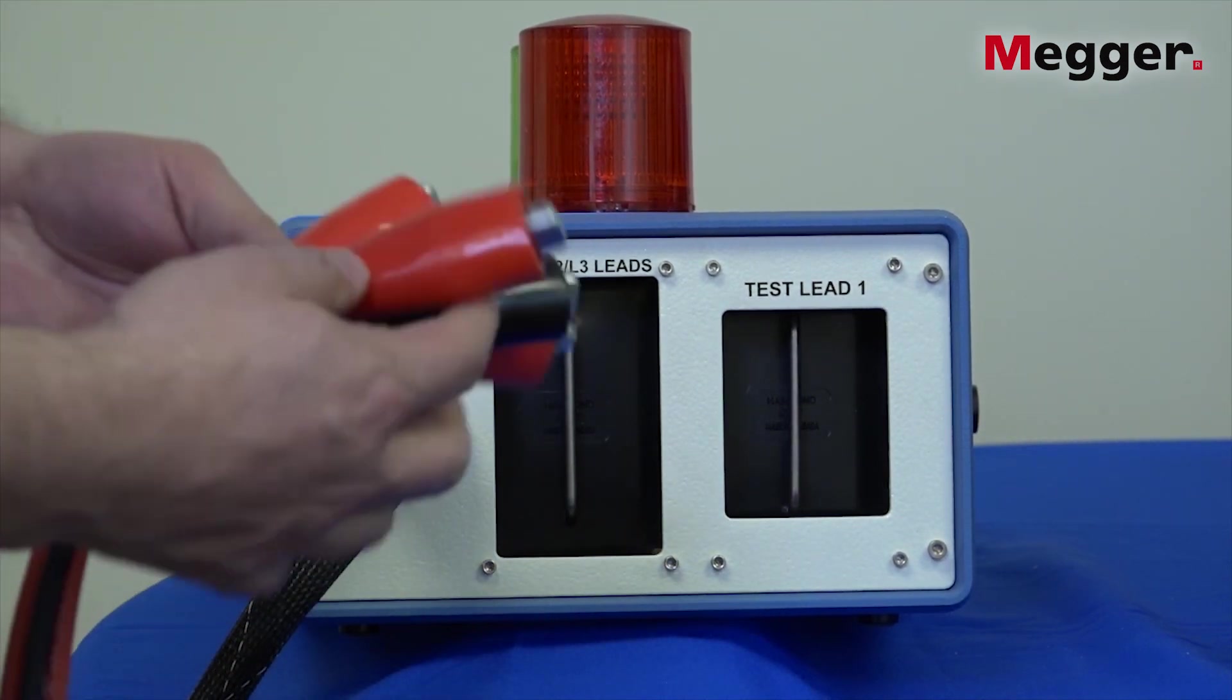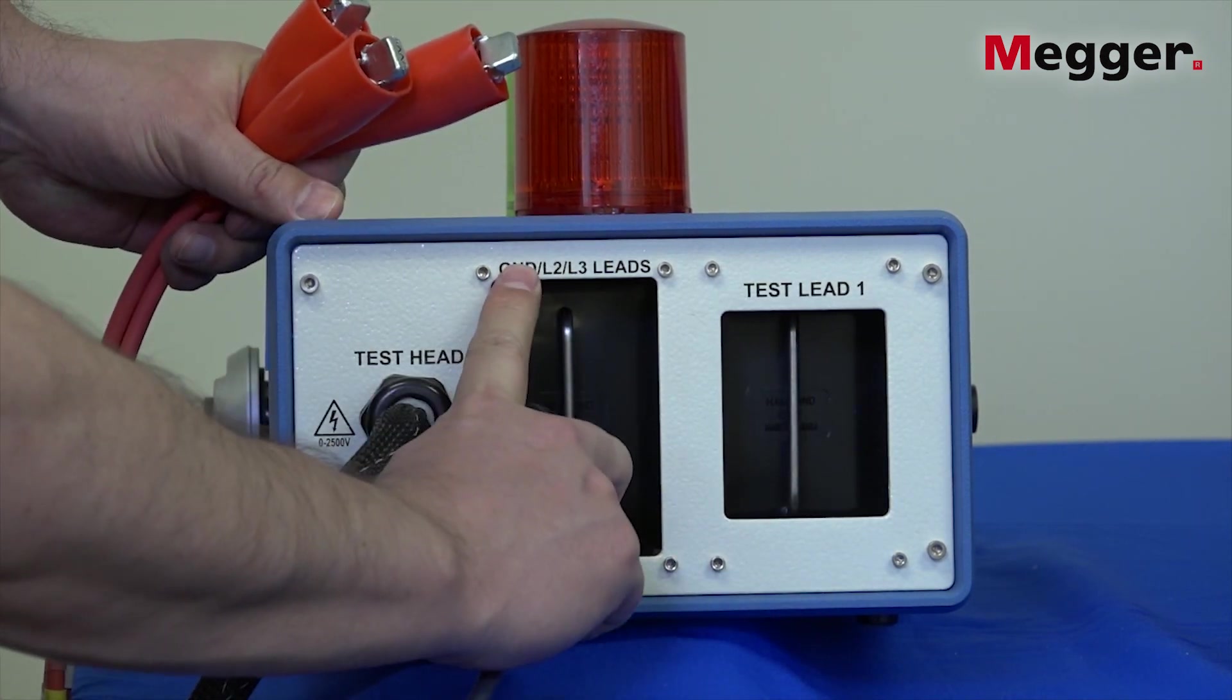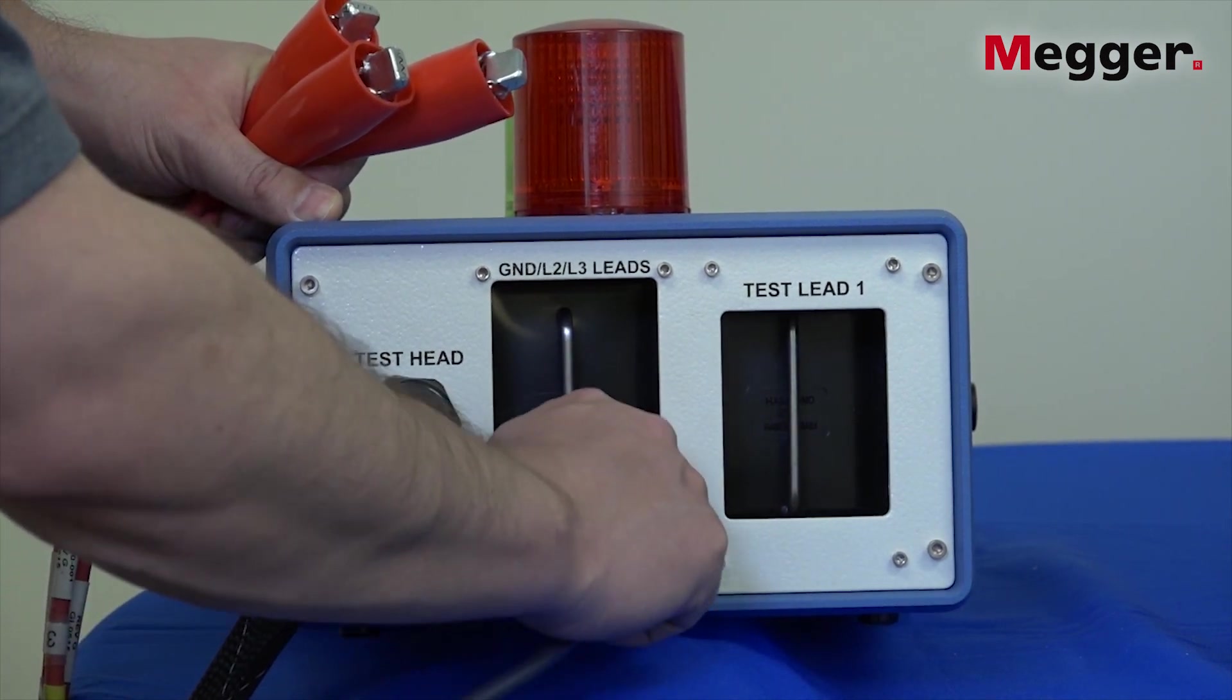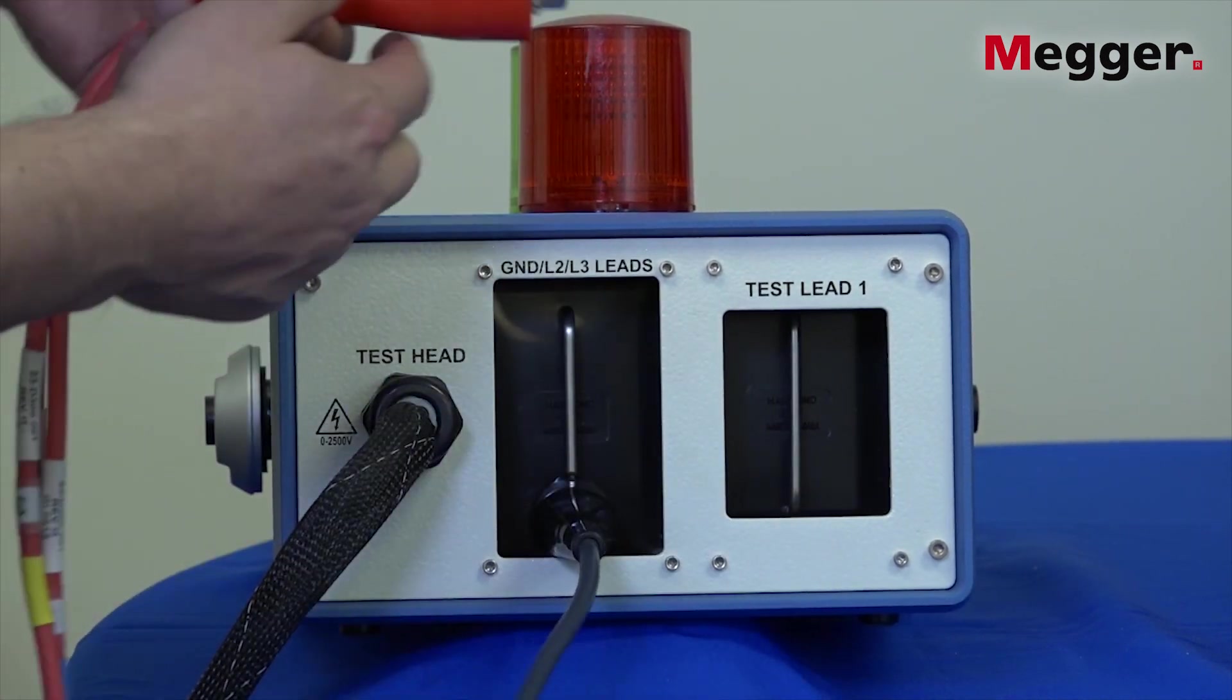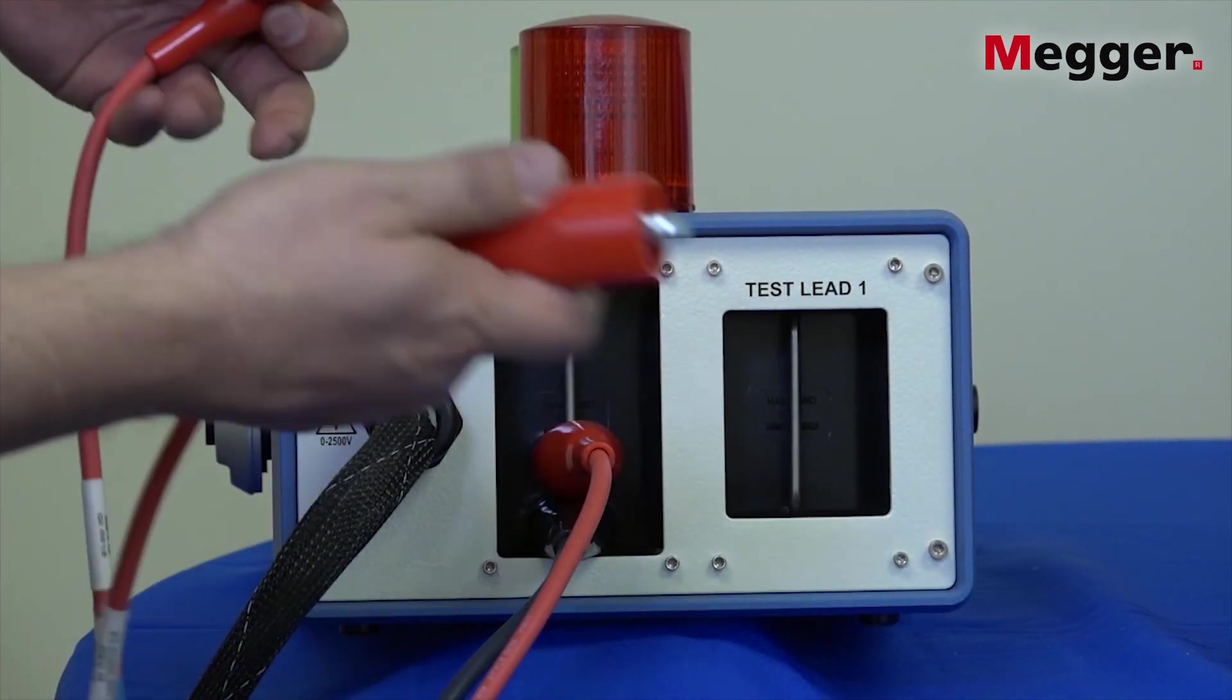First, connect the black ground lead to the left bar labeled ground lead, lead two, lead three. Clip that onto that post, and then also grab lead three and connect it and lead two as well.